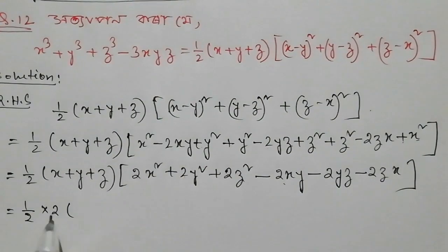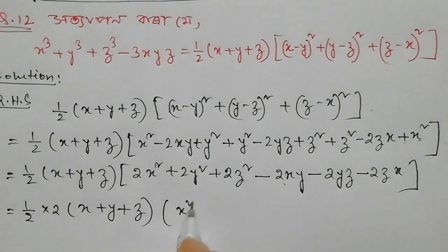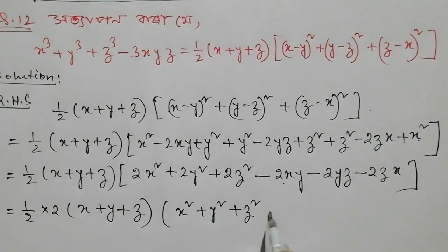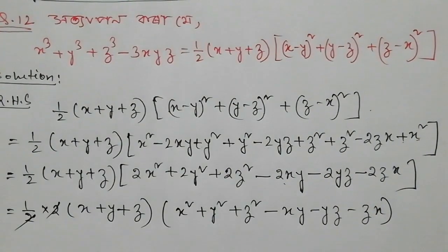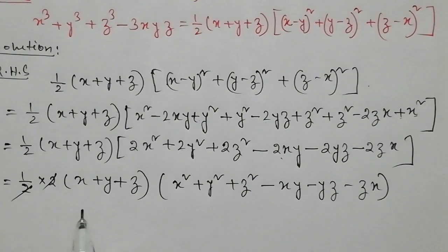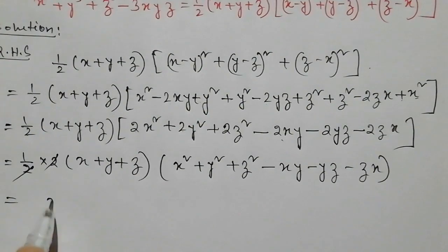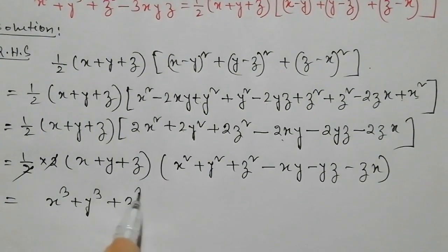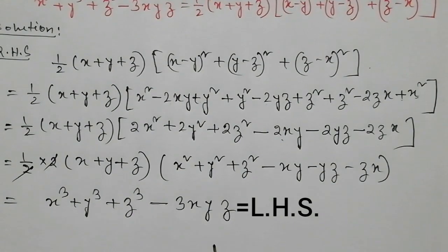So x plus y plus z — once that is done — we get x² plus y² plus z² minus xy minus yz minus zx. Then the full expression becomes: (x plus y plus z) into (x² plus y² plus z² minus xy minus yz minus zx), which by the formula equals x³ plus y³ plus z³ minus 3xyz.